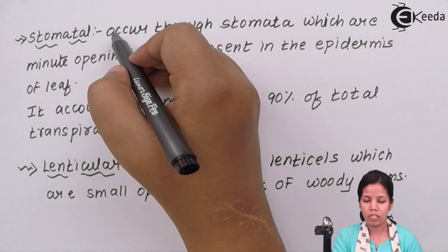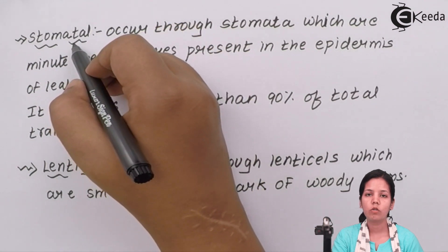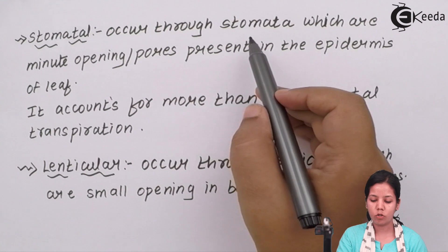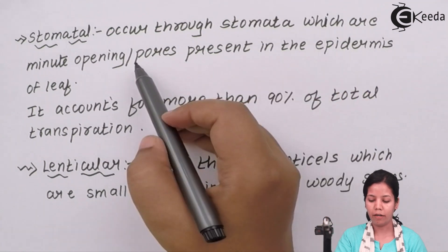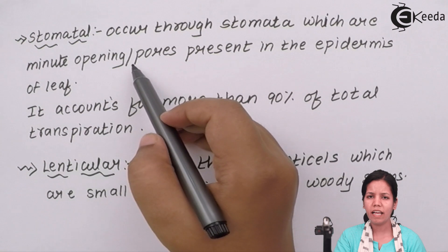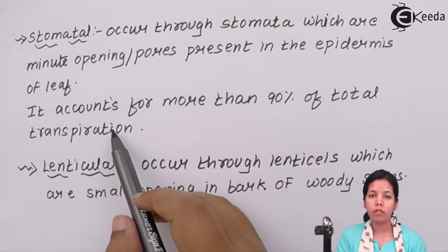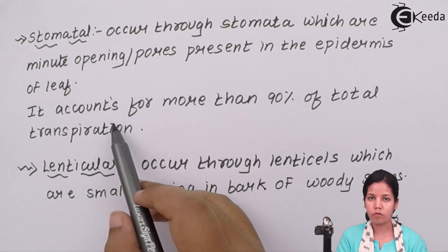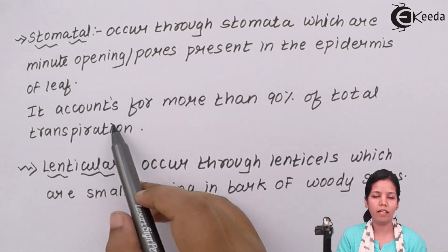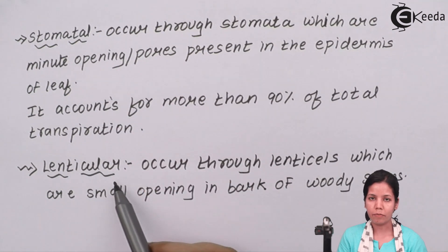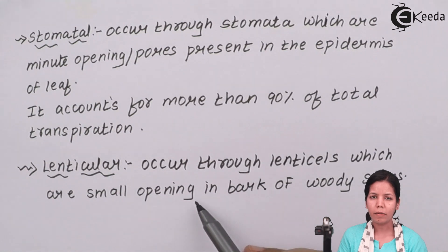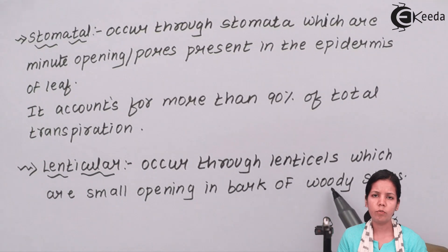The different types of transpiration are: first, stomatal transpiration which occurs inside stomata, which are minute openings or pores present inside the epidermis of a leaf. Whenever sun's energy falls on the leaf, the guard cells open which expose the stomata, and 90% of transpiration is stomatal transpiration in nature. The other kind is lenticular transpiration, which are small openings present in the bark or stems of a plant which help to remove certain extent of water molecules from them.